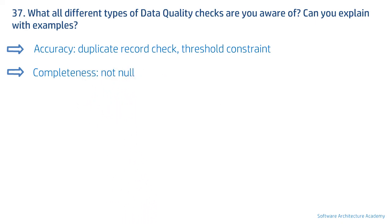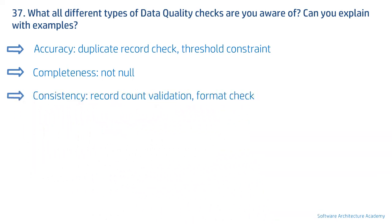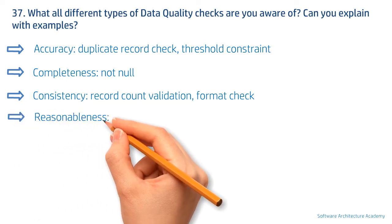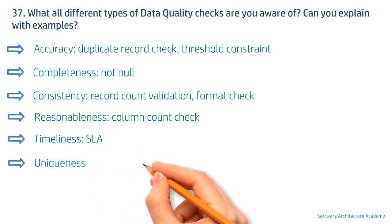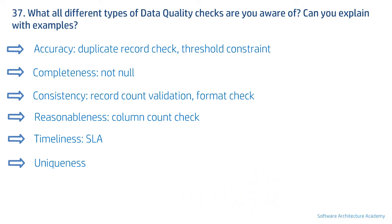Next is the completeness check, where data is compared before and after a movement. A typical example is a row count check or the popular null check. Then there is the consistency check — examples include record count validation and format checks, like verifying a social security number adheres to 10 digits with two hyphens. Next is the reasonableness check — for example, a column count check where if 8 columns are expected but only 7 are received, the check fails. Finally, there is the timeliness check, such as an SLA for a feed, and the uniqueness check to identify duplicate records.